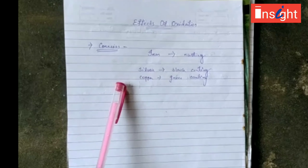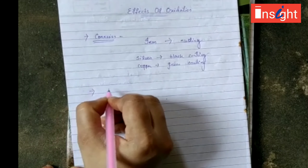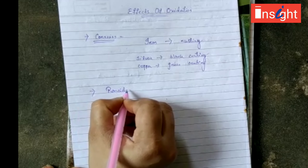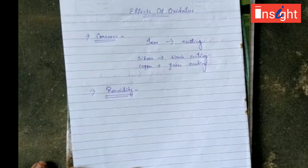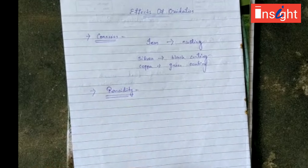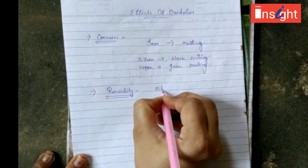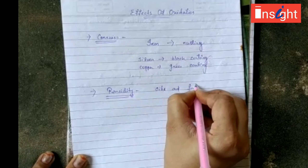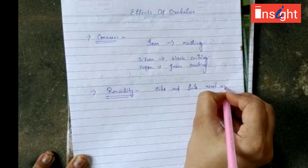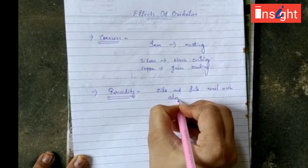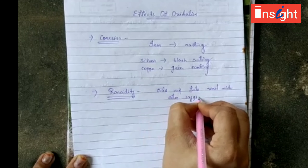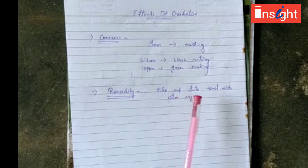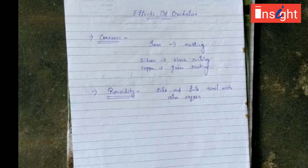Another effect of oxidation is rancidity. Rancidity is the phenomenon of the reaction of atmospheric oxygen with oils and fats. When oils and fats react with atmospheric oxygen, that phenomenon is known as rancidity.